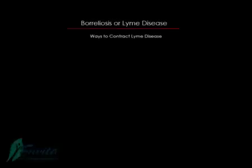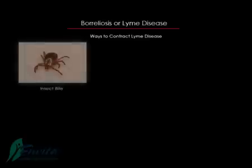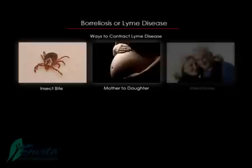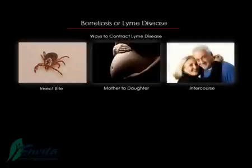There are three possible ways for Lyme disease to be transmitted. Number one, by the bite of an insect or tick that transfers blood. Two, in a pregnant woman, from the mother to the fetus via the placenta. And three, sexually transmitted.